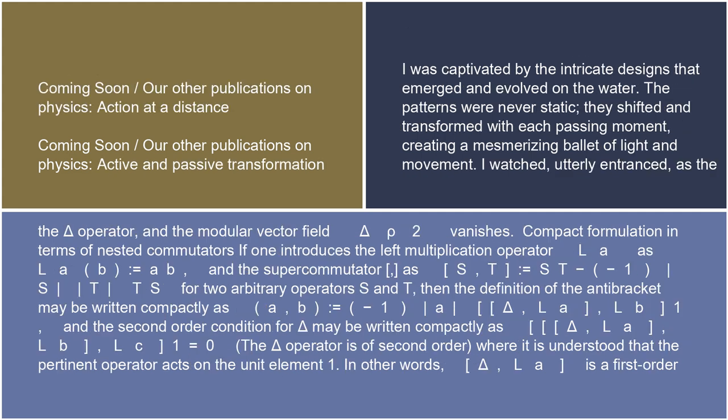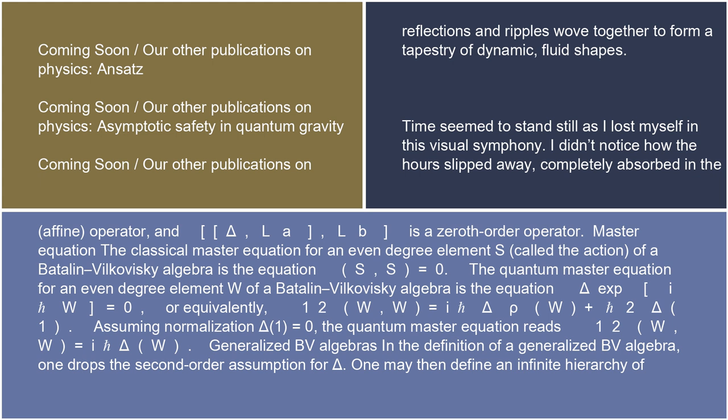Assuming normalization delta(1) = 0, the odd Laplacian delta_rho is just the delta operator and the modular vector field delta_rho² vanishes. In the compact formulation in terms of nested commutators, if one introduces the left multiplication operator L_A as L_A(B) = AB, and the supercommutator [S,T] = ST − (−1)^(|S||T|) TS for two arbitrary operators S and T, then the definition of the antibracket may be written compactly as {A,B} = (−1)^|A| [delta, [L_A, L_B]](1). The second-order condition for delta may be written compactly as [delta, [L_A, [L_B, L_C]]](1) = 0. It is understood that delta·L_A is of first order (affine operator) and delta·L_A·L_B is a zeroth-order operator.